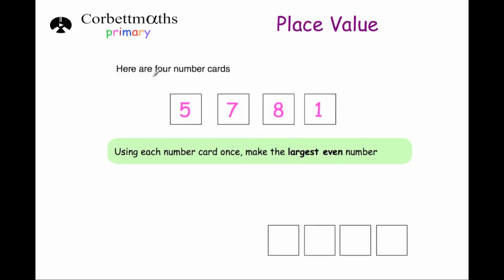Our last question: here are four number cards — 5, 7, 8, 1. Use each number card once to make the largest even number. Now because it says even, that means the last digit in the units column needs to be either a 0, 2, 4, 6 or 8. We've only got one of those numbers here — only the 8 as a possible choice. So we're going to have to put the 8 into the units column to make it even.